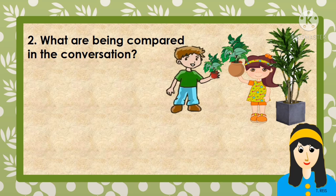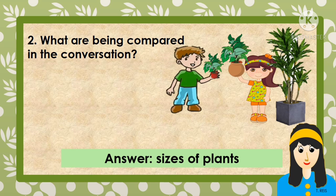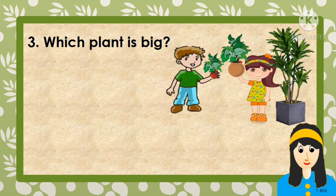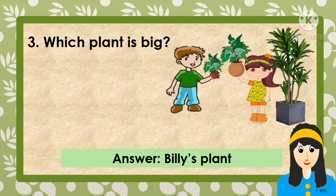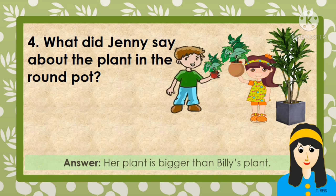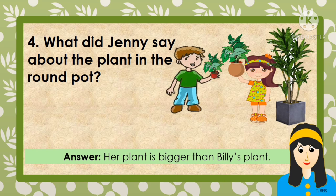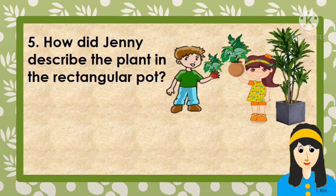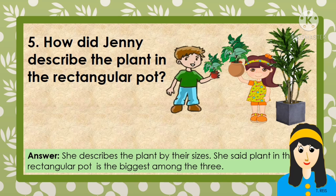Answer the following questions. Number 1: Who are talking in the conversation? The answer is Billy and Jenny. Number 2: What are being compared? The answer is the sizes of plants. Number 3: Which plant is big? The answer is Billy's plant. Number 4: What did Jenny say about the plant in the round pot? She said her plant is bigger. Number 5: How did Jenny describe the plant in the rectangular patch? She said it is the biggest among the three.